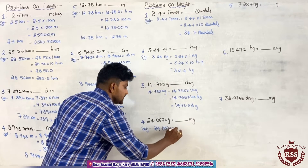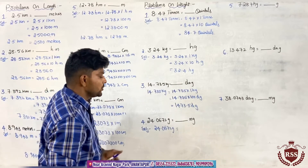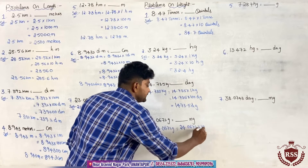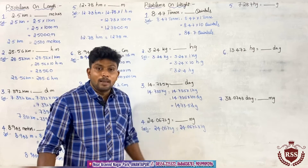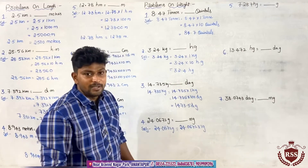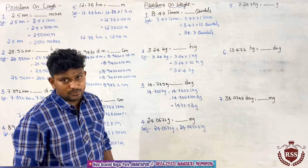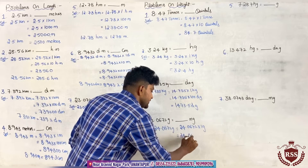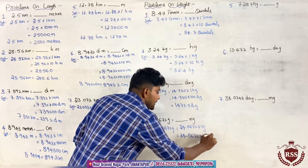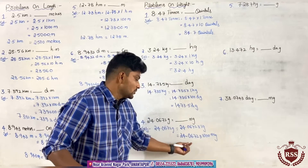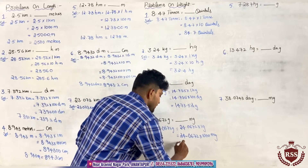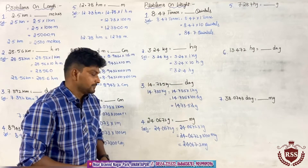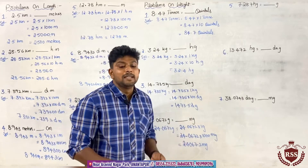Next: 24.0672 grams equals 24.0672 into 1 gram. 1 gram equals 1000 mg. So 24.0672 into 1000 mg. We have three zeros in the product, so the decimal point moves forward by three digits. It will be 24067.2 mg. That is the conversion from grams to milligrams.